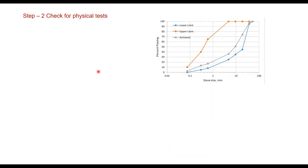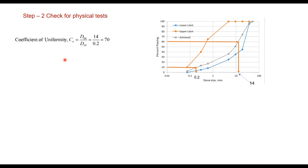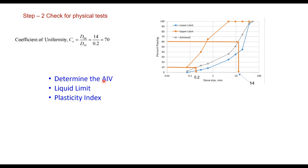The second step is to check the physical tests of the aggregate. D60 is found to be 14 mm and D10 is 0.2 mm, giving a coefficient of uniformity of 14/0.2 = 70, which is more than 5 and satisfies the condition. Then determine the aggregate impact value, liquid limit, and plasticity index and verify whether all these values are within permissible limits. Once aggregates are declared suitable, we proceed to the third step.